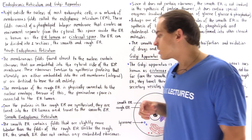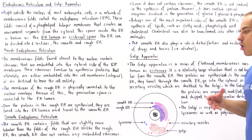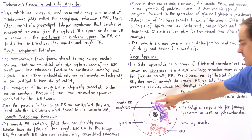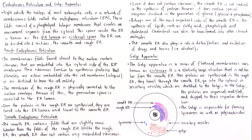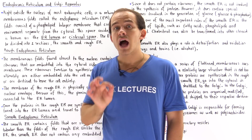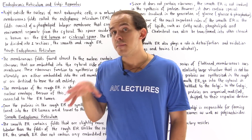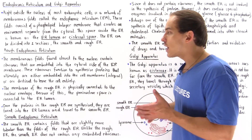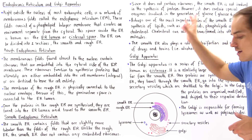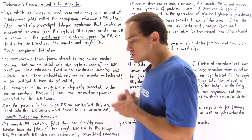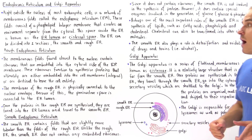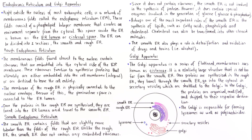The smooth ER contains folds that are slightly more tubular than those on the rough ER, as can be seen in the diagram. Unlike the rough ER, the smooth ER does not contain ribosomes embedded in the membrane — that's exactly why we call it the smooth ER — and since it lacks ribosomes, the smooth ER is not directly involved in synthesizing proteins.